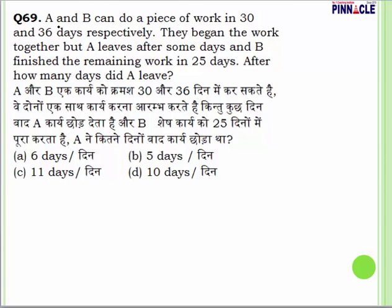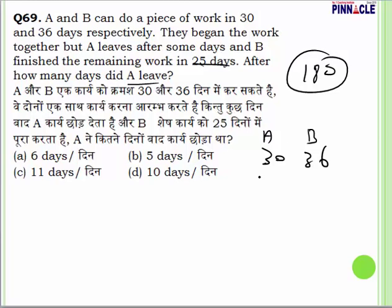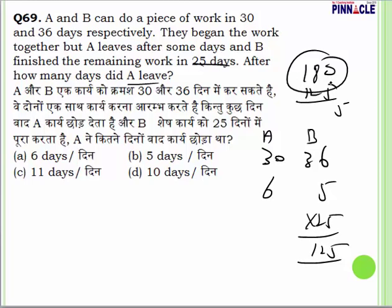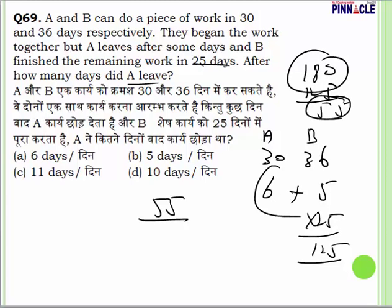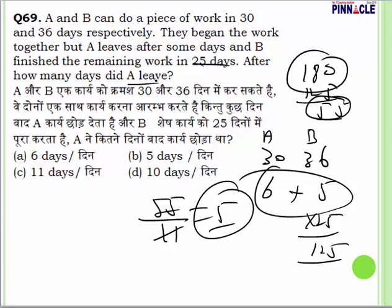Question number 69: A and B can do a piece of work in 30 and 36 days respectively. Total work = 180 units. A does 6 units/day, B does 5 units/day. B finishes remaining work alone in 25 days, completing 125 units alone. So together they completed 180 − 125 = 55 units. Combined rate = 11 units/day. Days worked together = 55/11 = 5 days. A leaves after 5 days. Answer is 5.